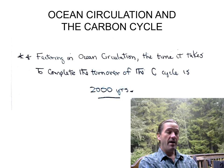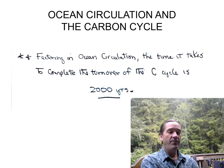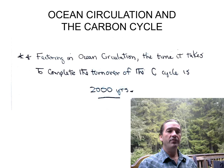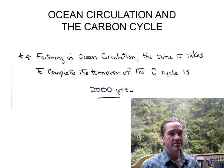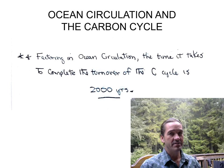That was a lot, but it's very important to realize that the ocean is a very important part of the carbon cycle. We need to factor in ocean circulation when considering the timescale of the carbon cycle. To get complete turnover of the carbon cycle, it's 2,000 years.